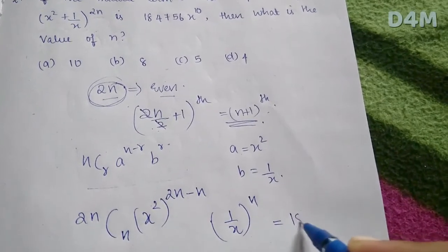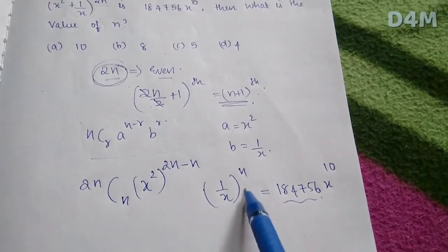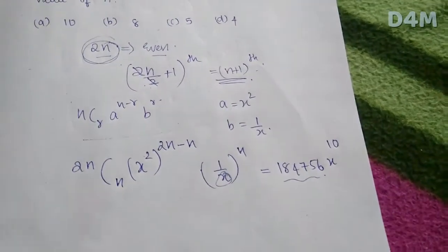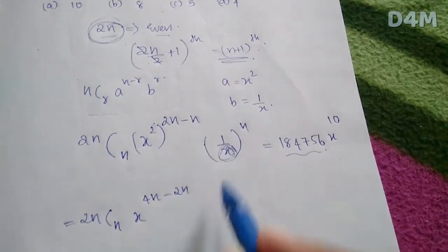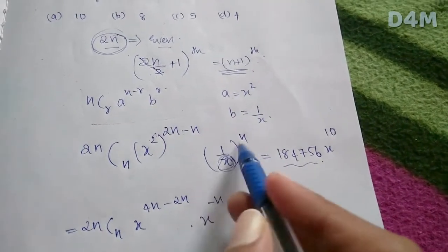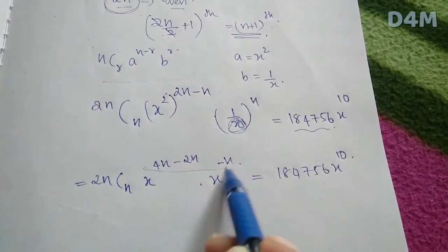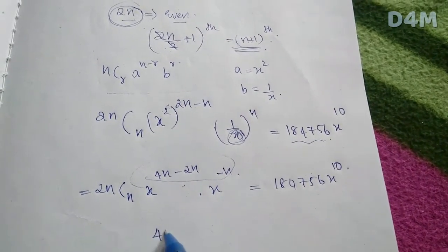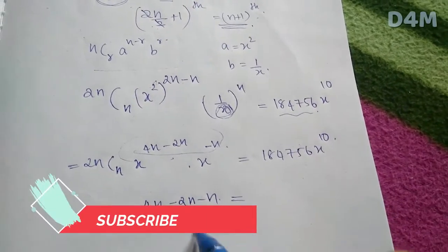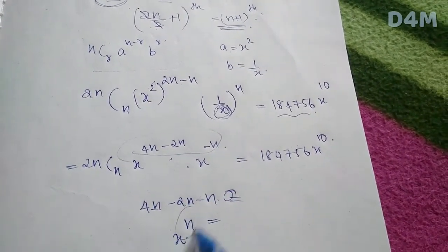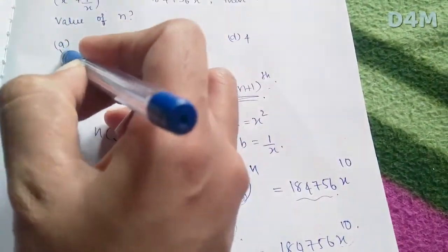Working through the powers: 4n - 2n - n = n. So x raised to n here, with x raised to 10. If n is equal to 10, then the n value is 10. Option A is the right answer.